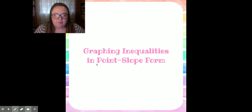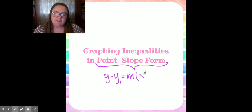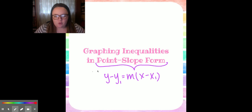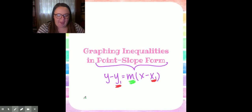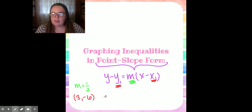I'm going to make sure we're on the same page before we get started. Point-slope form, when we're talking about equations, looks like y minus y1 equals m parentheses x minus x1. That is point-slope form because in that formula you are given a point with your x1 and your y1, and you are given a slope which is your m.